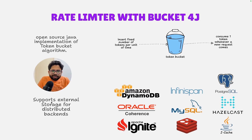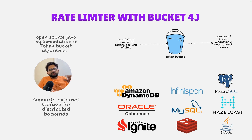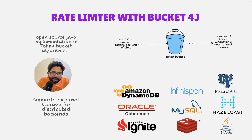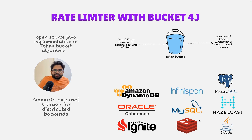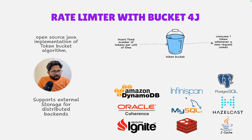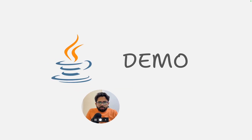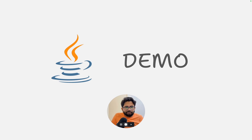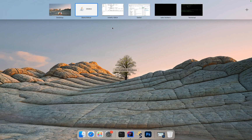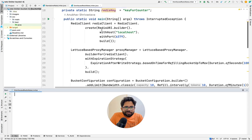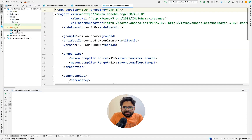Bucket4j supports external storage for distributed backends where you have multiple backend instances. You have to store the quota somewhere in a common place, and they support around 9 data sources like Amazon, Postgres, Oracle, and other common storage systems which you can use for your rate limiting. Now I'll quickly move on to the coding part and show you how things work. This is the code which I have already written.